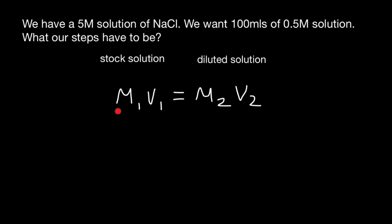In this formula, M1 stands for the molarity of the stock solution, V1 stands for the volume of the stock solution, M2 stands for the molarity of diluted solution, and V2 stands for the volume of the diluted solution.